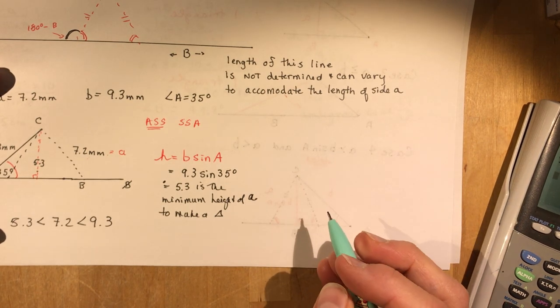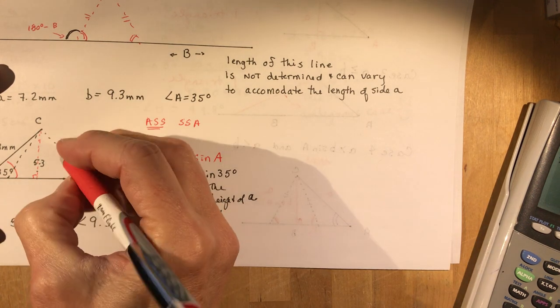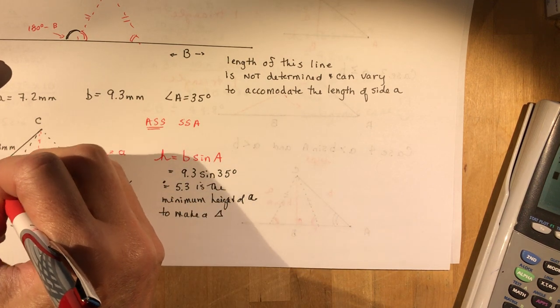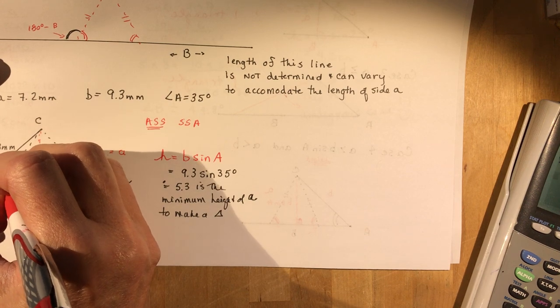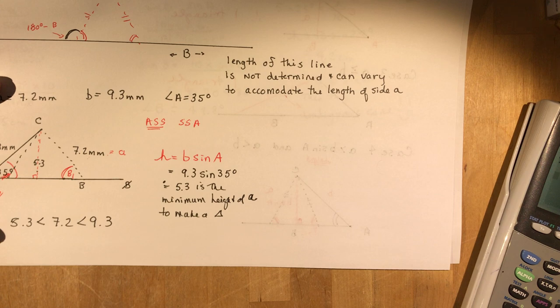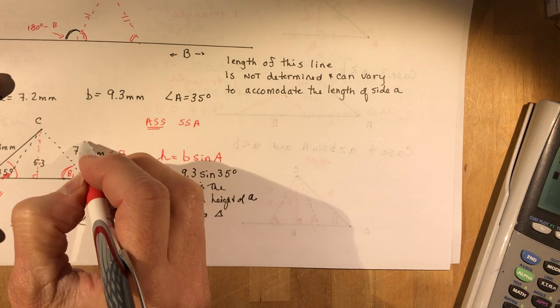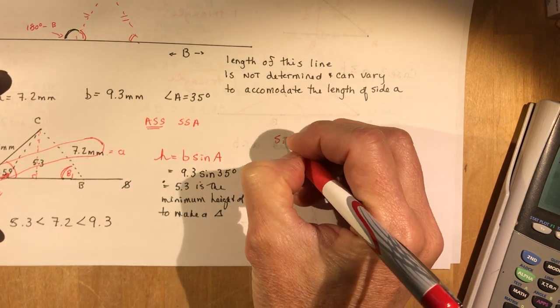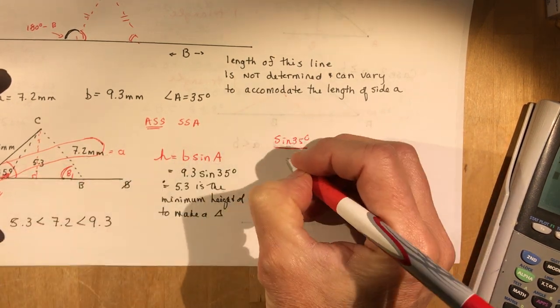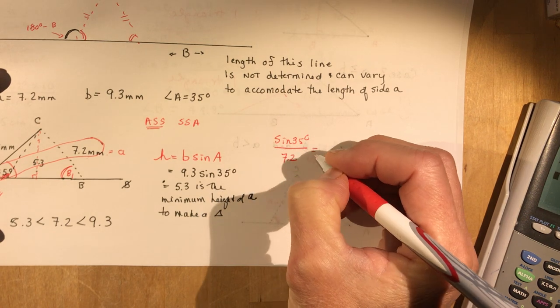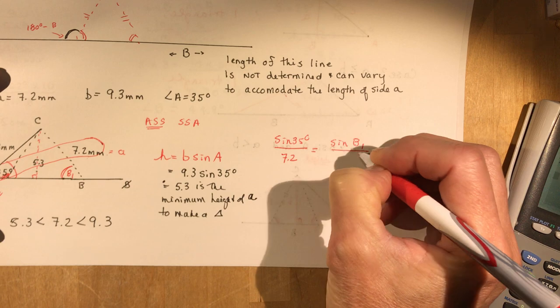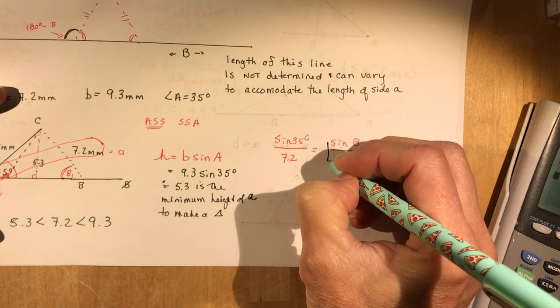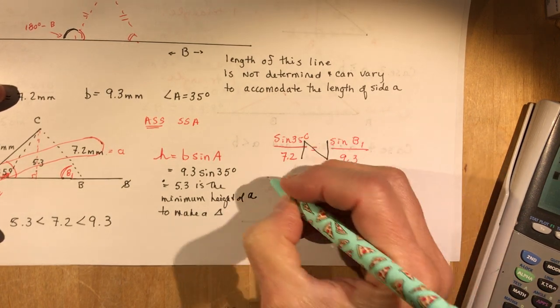So we could figure out this angle here now so we're going to find, let's find this, we'll call this B1. This will be B1 and this angle here the obtuse angle we'll call that B2. So how do I solve those angles? I'm going to use the sine law. So I have sine of 35 degrees over 7.2 is equal to the sine of B1 over 9.3. So sine B1 is this times this divided by that. So sine B is equal to 9.3 times sine of 35 degrees divided by 7.2.